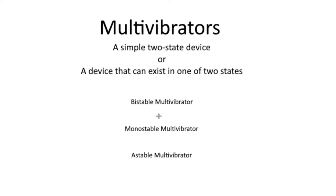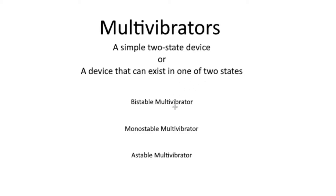There are three types of multivibrators: the bistable, monostable, and astable multivibrators. Those prefixes — bistable, monostable, and astable — actually dictate the type of condition that needs to be met in order for the multivibrator to change state.